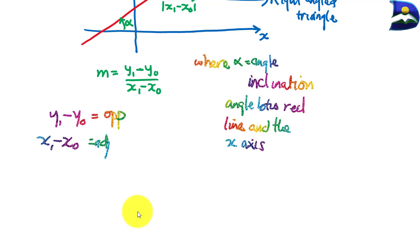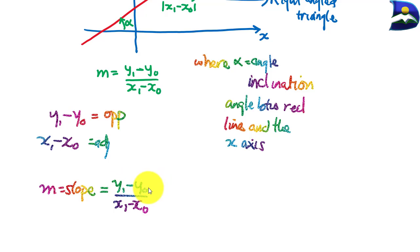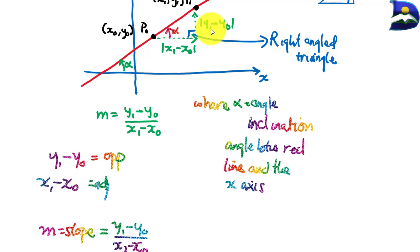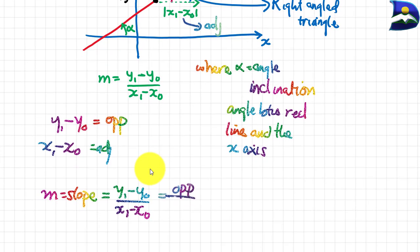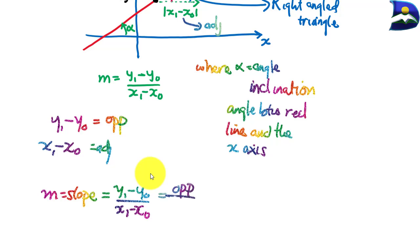We can now conclude that our slope m equals y1 minus y0 over x1 minus x0, which is the same as the opposite side over the adjacent side. This ratio — opposite over adjacent — is equal to tan(alpha).